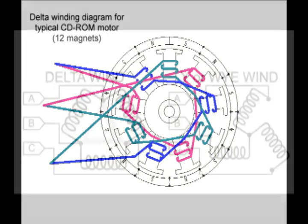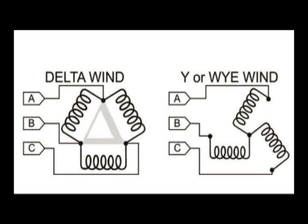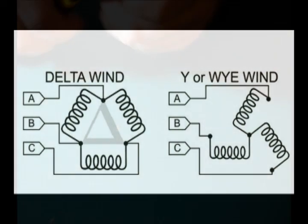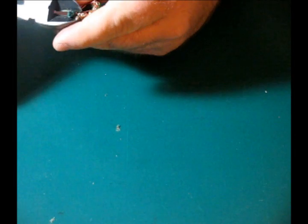This is a diagram of the different kinds of winds. Your delta wind tends to provide more speed, while your star wind or WYE wind provides more torque.